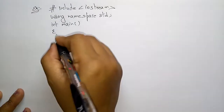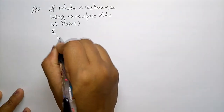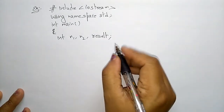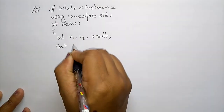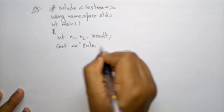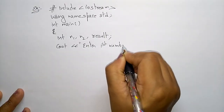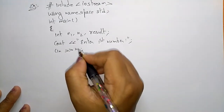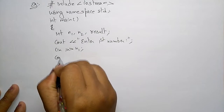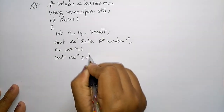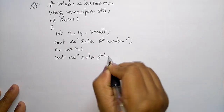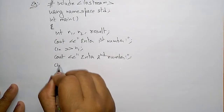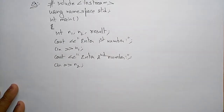First I declare the values: int n1, n2, and result — three parameters. Now I am printing the message 'enter first number', so whatever value you enter, cin reads that number. After that, cout 'enter second number' and cin reads n2.